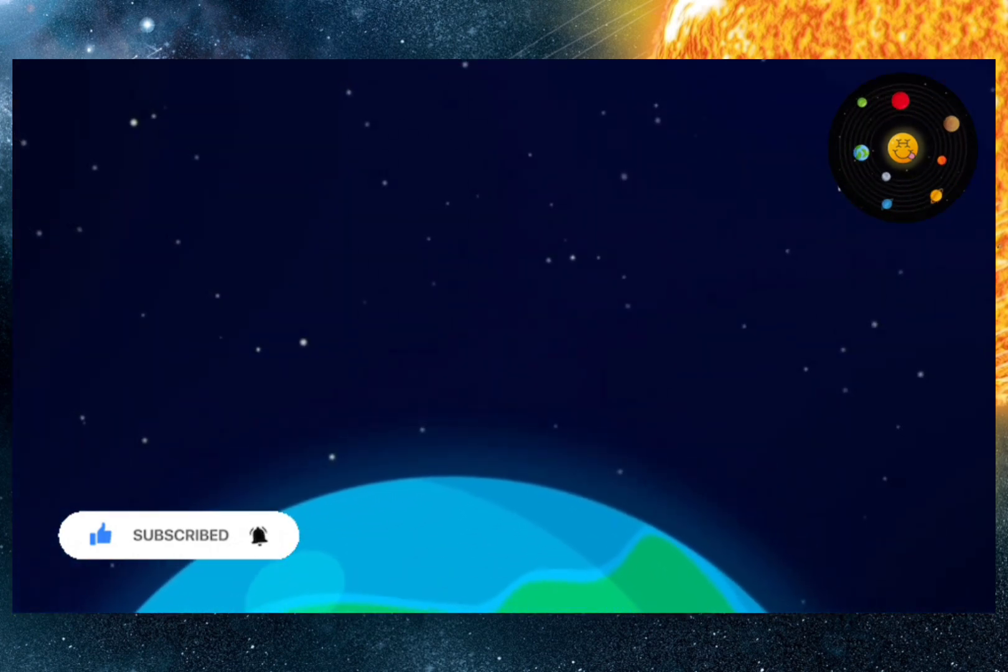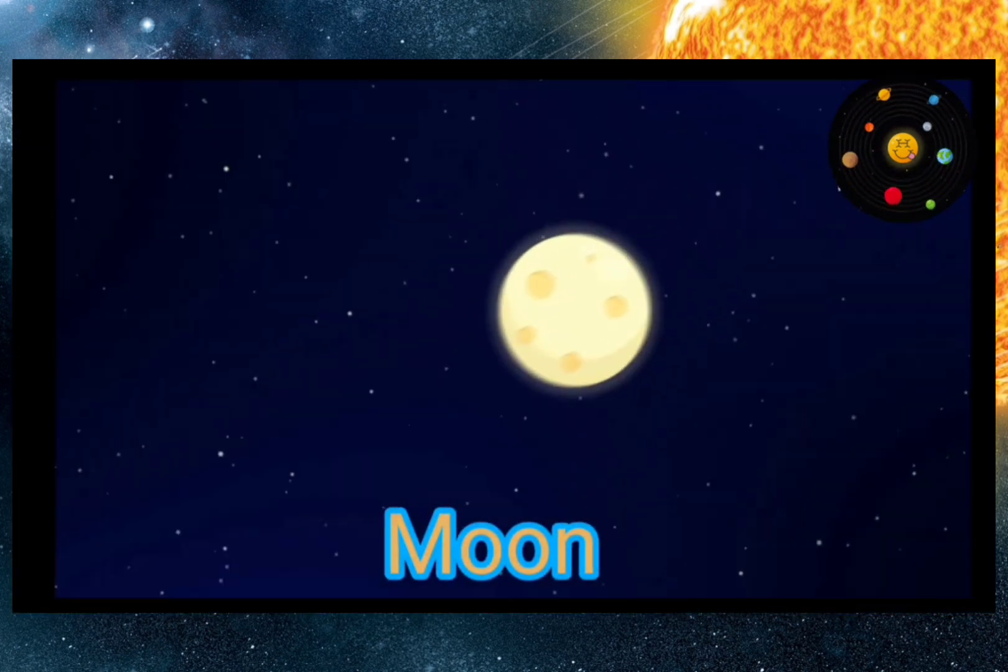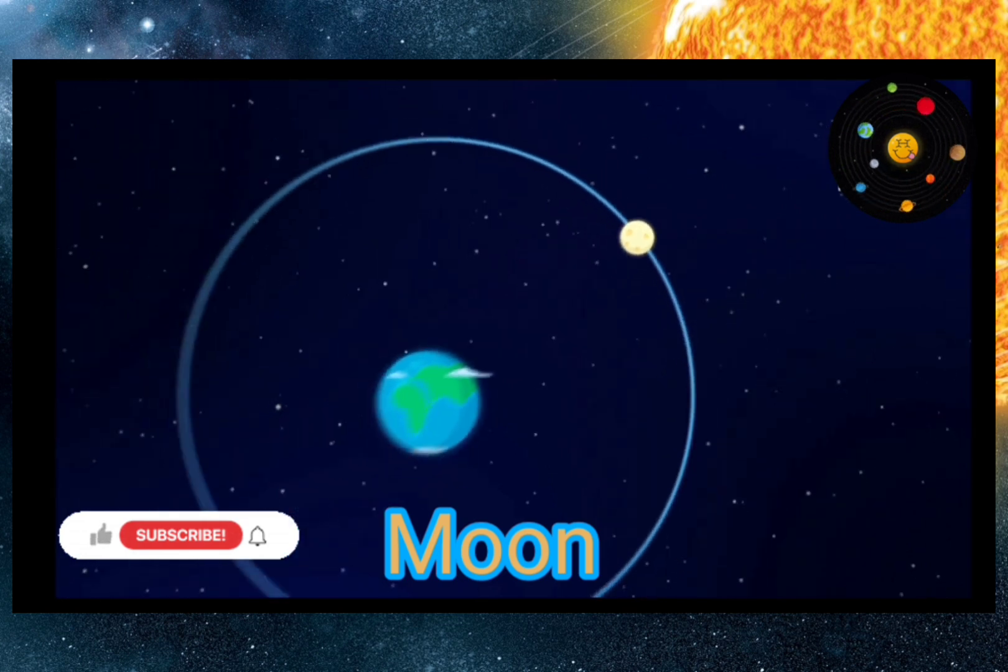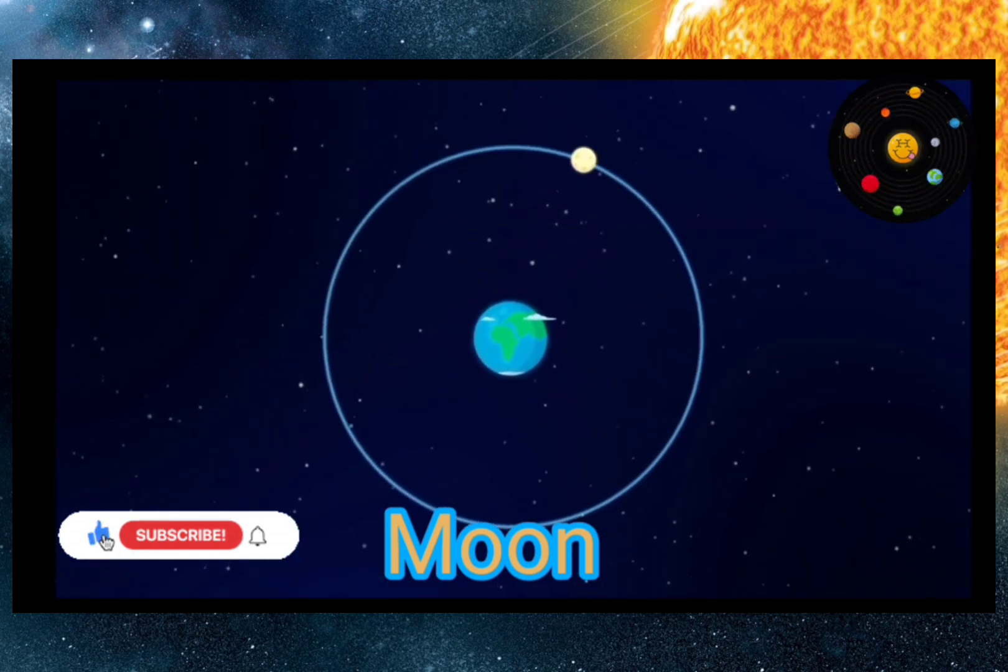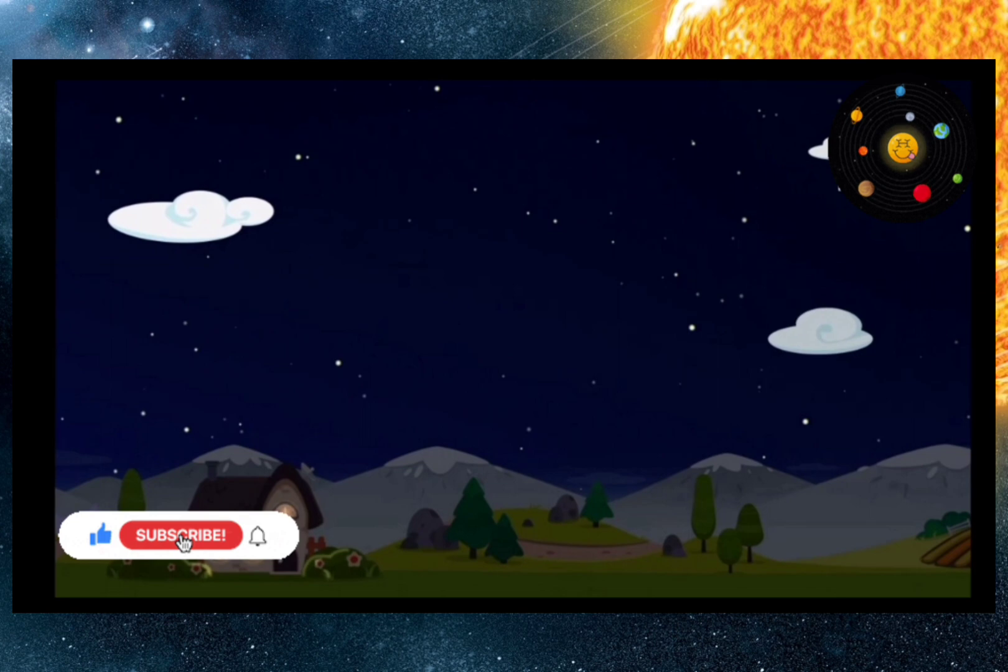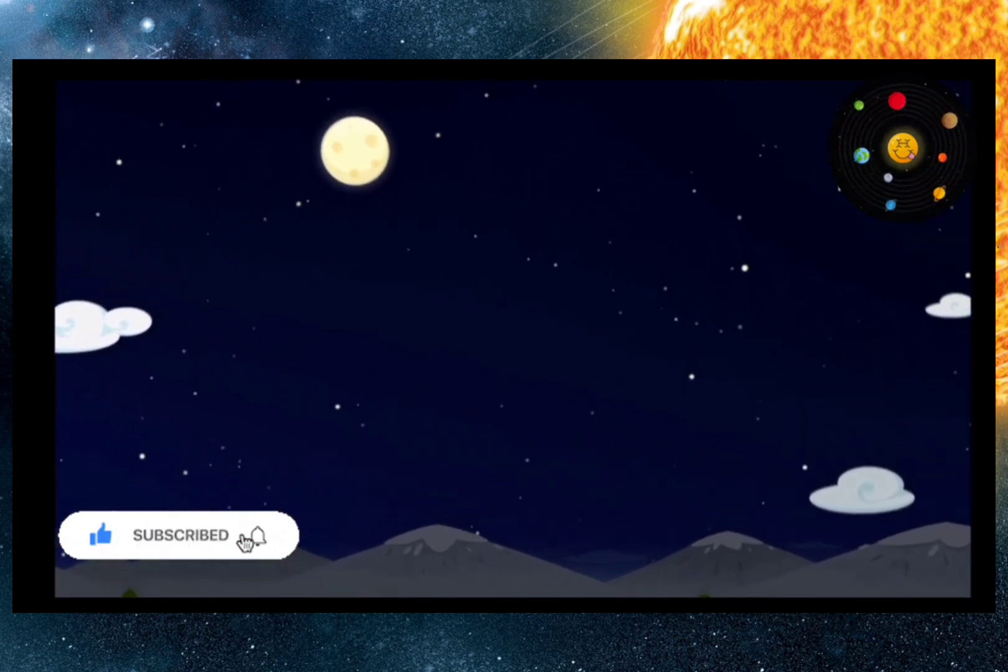Hey kids, here's the Earth. And that's the Moon, the satellite of the Earth. That means that it goes around the Earth. That's why we see it travel across the sky, day and night.